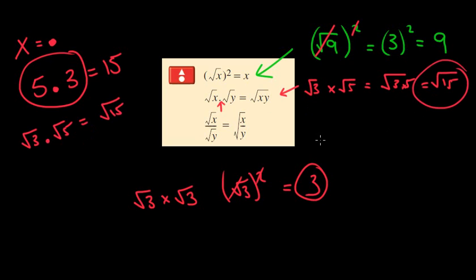And the last thing we looked at was this one, where you had the square root, let's say, of 10 divided by the square root of 2, which is the same as saying the square root of 10 divided by 2, in this case, would be the square root of 5.